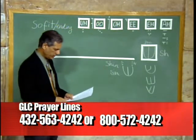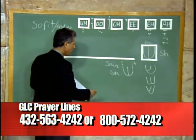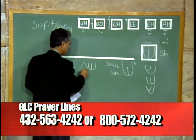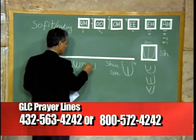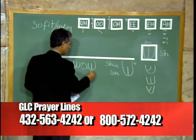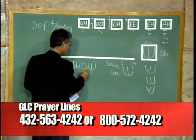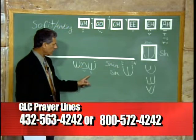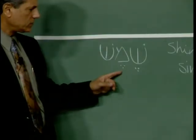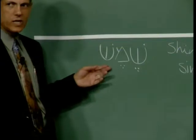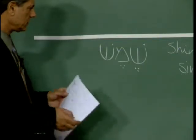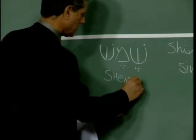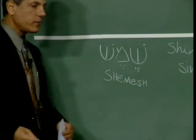What can we do with the letter Shin? One word we can write with the letter Shin — actually more than one Shin — is this one. We have a Shin with an A sound, a Mem with an A sound, so that's She, Me, and a Shin: Shemesh. Shemesh is sun.